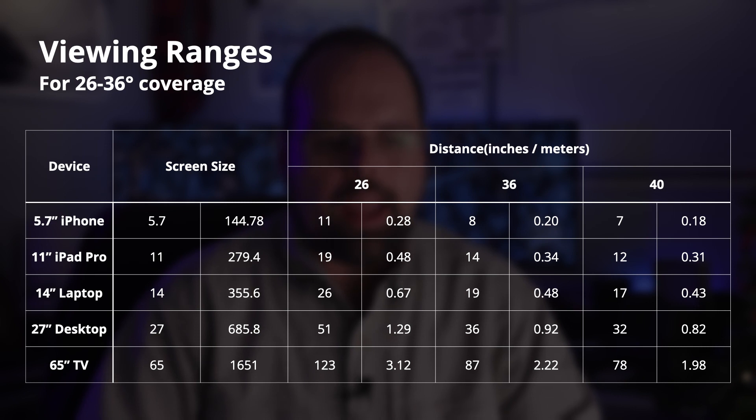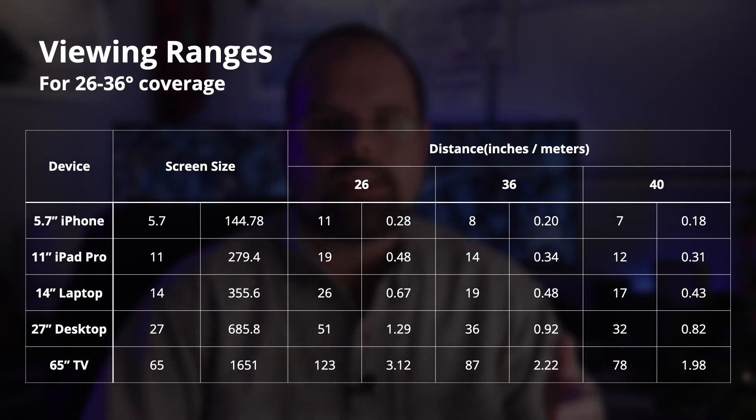This raises a big question: SMPTE and THX standards talk about theater or home theater screens — does that apply to phones, computers, and tablets? I looked at all the devices I have and calculated what the viewing distance would be for a 5.7-inch phone to a 65-inch TV at 26, 36, and 40 degrees. By and large I fall in the 26–36 degree range with pretty much every device I own. My iPhone at 26 degrees would be 11 inches from my face, 40 degrees at 7 inches — which causes tremendous eye strain, so I tend to hold it further away.